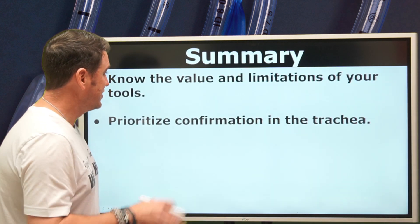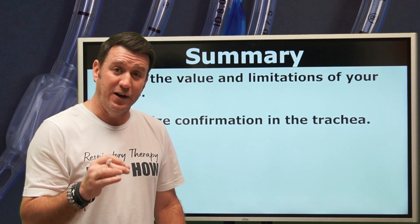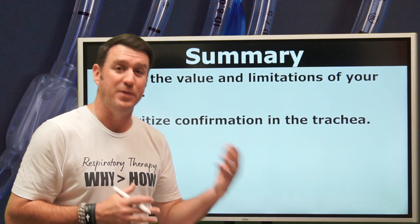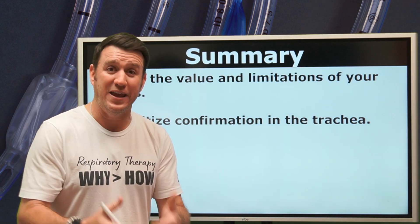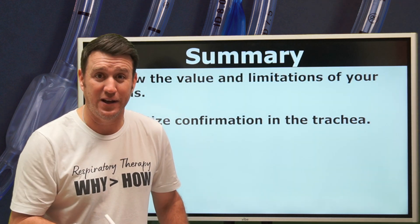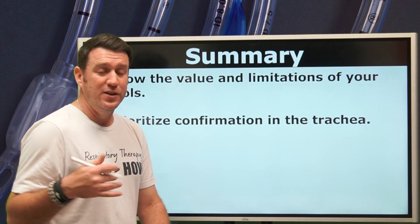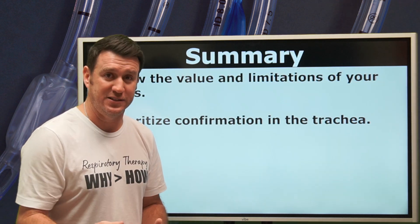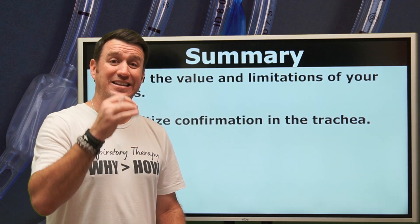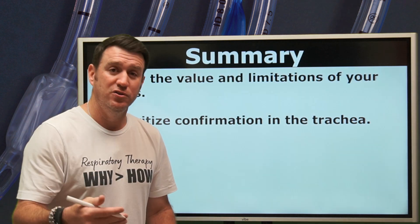To sum up: know the value and limitations of your tools. Chest x-ray is very valuable in showing positioning relative to the carina, but cannot tell you if you're in the esophagus or the trachea. Your colorimetry device tells you if you're in the airway by detecting exhaled CO2, but you could be right main-stemmed, too high, or sitting at the carina — you just know you're in the airway. Always, the priority is to confirm you are in the trachea before concerning yourself with where it is relative to the carina.